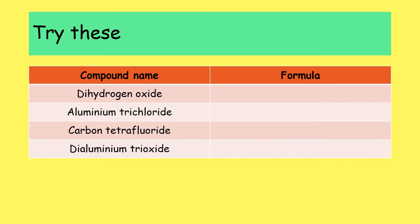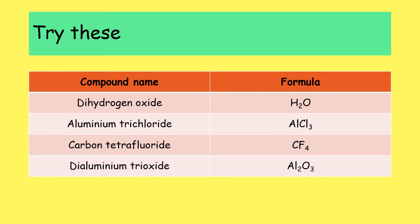Here are a few for you to try: dihydrogen oxide, aluminium trichloride, carbon tetrafluoride, and dialuminium trioxide. Pause the video if you need to. Dihydrogen oxide — the clue 'di' is on hydrogen, so H₂O; oxide has no clue so it's just one. Aluminium trichloride — aluminium has no clue so it's just Al; 'tri' means three chlorines, so AlCl₃. Carbon tetrafluoride — 'tetra' means four fluorines and carbon has no clue, so CF₄. Dialuminium trioxide — 'di' means two aluminiums and 'tri' means three oxygens, so the formula is Al₂O₃.